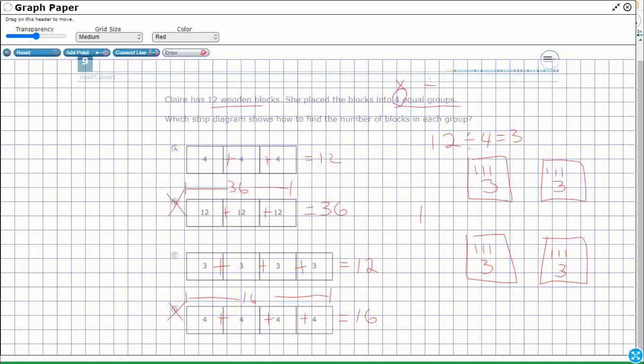One of them is showing 12 divided into 3 groups equals 4 in a group, right? And both of those are correct number sentences. But I need 4 equal groups.